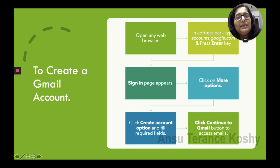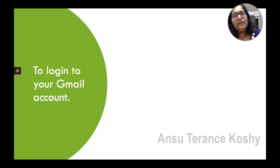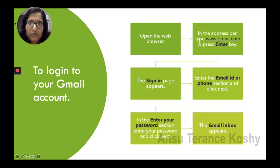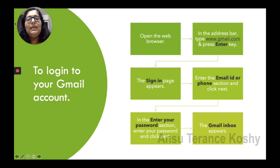Click the 'Continue to Gmail' button to access your emails. Now, how do you log into your Gmail account? If you close it and want to open it again, follow these steps: open the web browser and in the address bar type www.gmail.com and press Enter. The sign-in page appears. Enter your email ID or phone number, then enter your password in the password field, and press Enter. The Gmail inbox then appears.